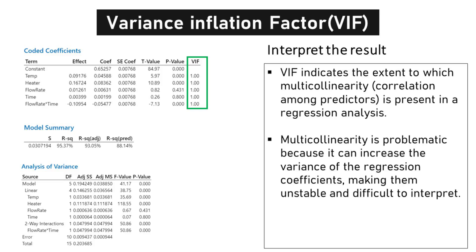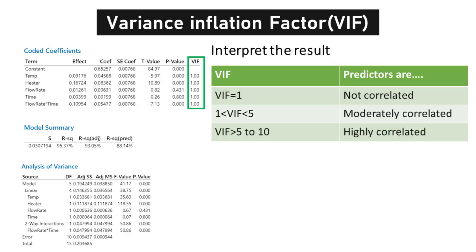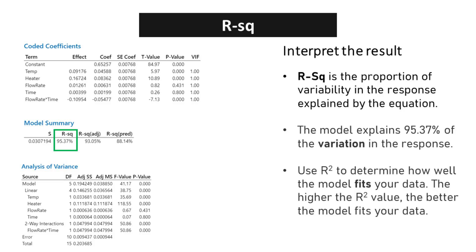This instability makes it challenging to interpret the impact of individual predictors on the outcome variable. A VIF of 1 is a positive indication, suggesting that the independent variables are not correlated with each other. A VIF value greater than 5 or 10 indicates a high level of multicollinearity. The coefficient of determination, R-squared, represents the proportion of variability in the response variable explained by the regression equation. In this model, the R-squared value is 95.37%, meaning the model accounts for 95.37% of the variation in the response variable.